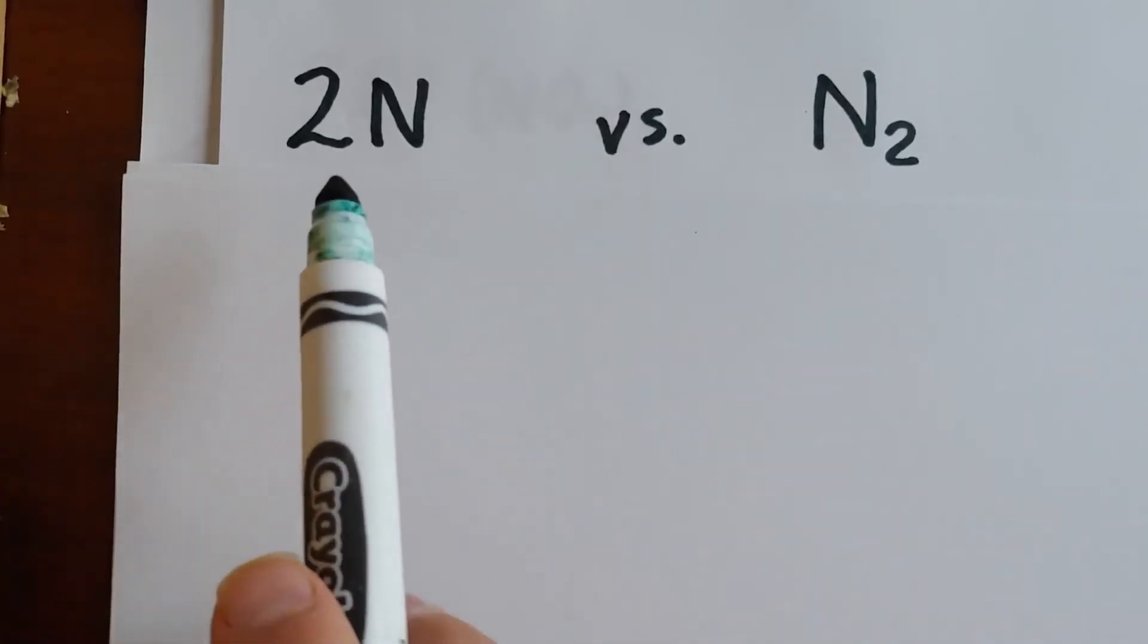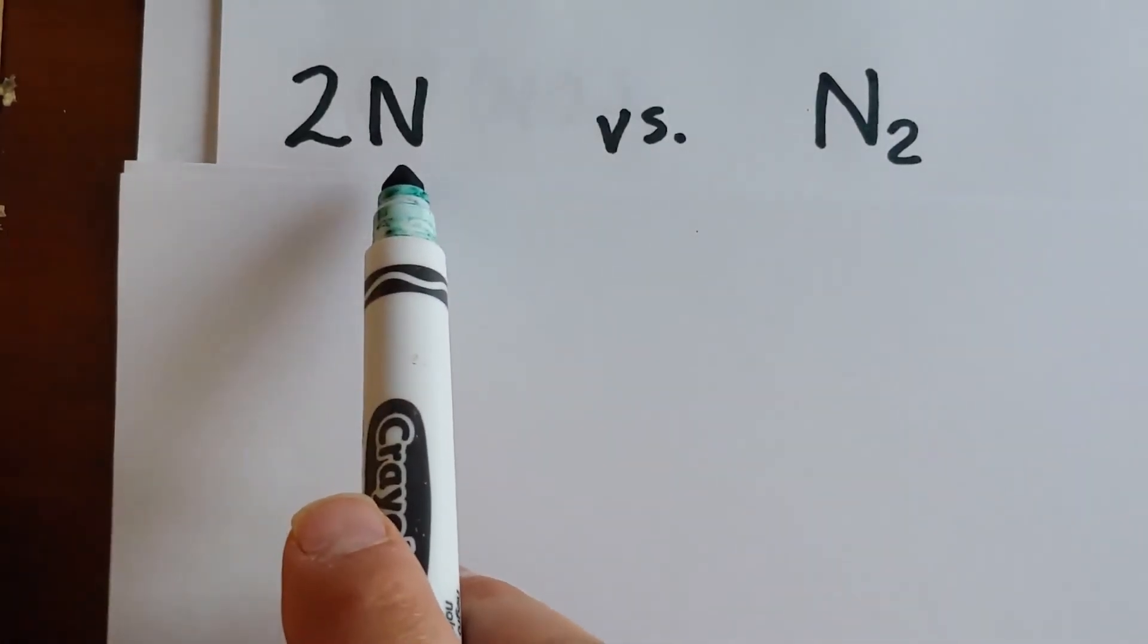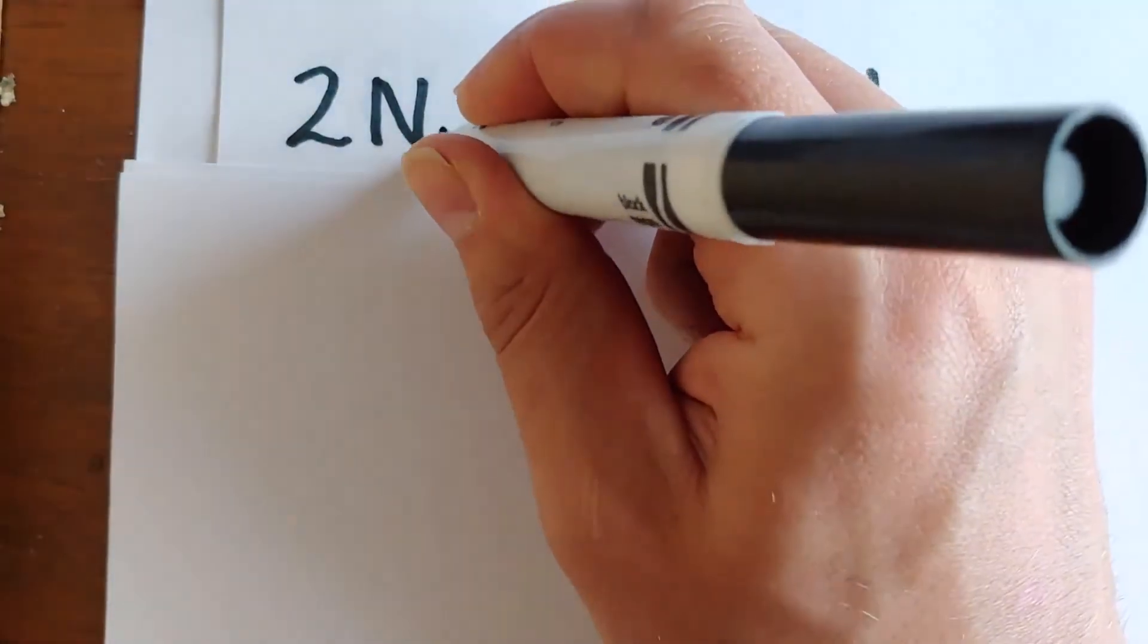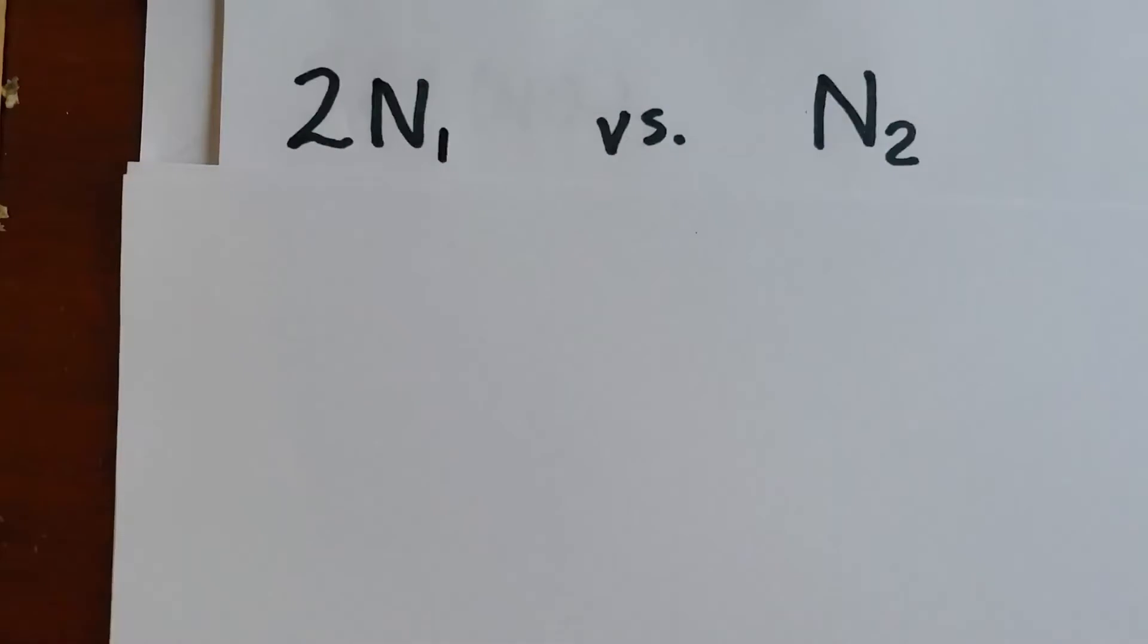So for instance, 2N, there isn't a subscript. Well, if there isn't one, it is understood that that means there's only one of them. So this would mean two sets of N1.